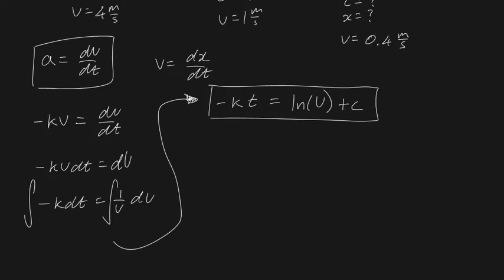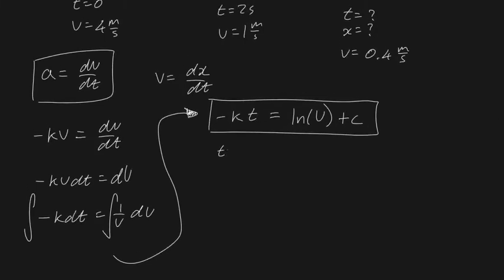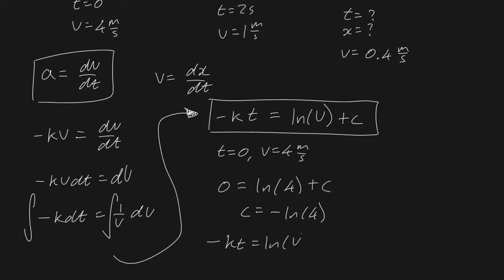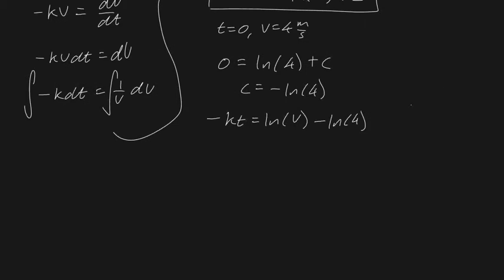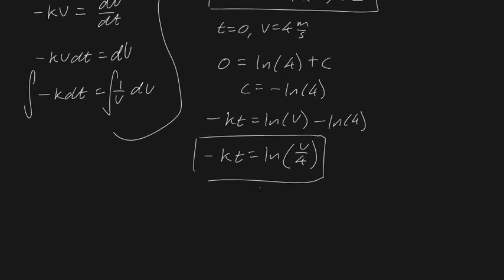Using the first boundary condition — t = 0, v = 4 m/s — the left side gives 0 = log(4) + c, so c = −log(4). The equation becomes minus kt = log v − log 4. By log laws, subtracting logs means dividing, so this simplifies to minus kt = log(v/4). Remember, log here is the natural logarithm, not log base 10.